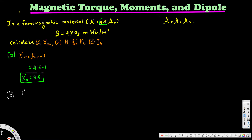For part B, we need to find H, the magnetic field intensity. We use the formula B equals mu times H, so H equals B divided by mu. Mu is mu-r times mu-naught, and we already know mu-r is 4.5.